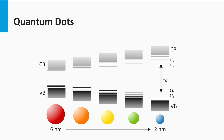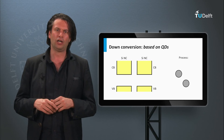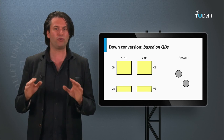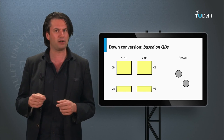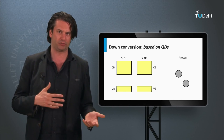The bandgap can be tuned by the size of the nanoparticles — the smaller the particles, the larger the bandgap. This enables interesting bandgap engineering possibilities, such as a multi-junction solar cell based on junctions with different quantum dot sizes in every junction. To use quantum dots for down conversion or multiple exciton generation, an ensemble of nanoparticles is embedded in a host material.